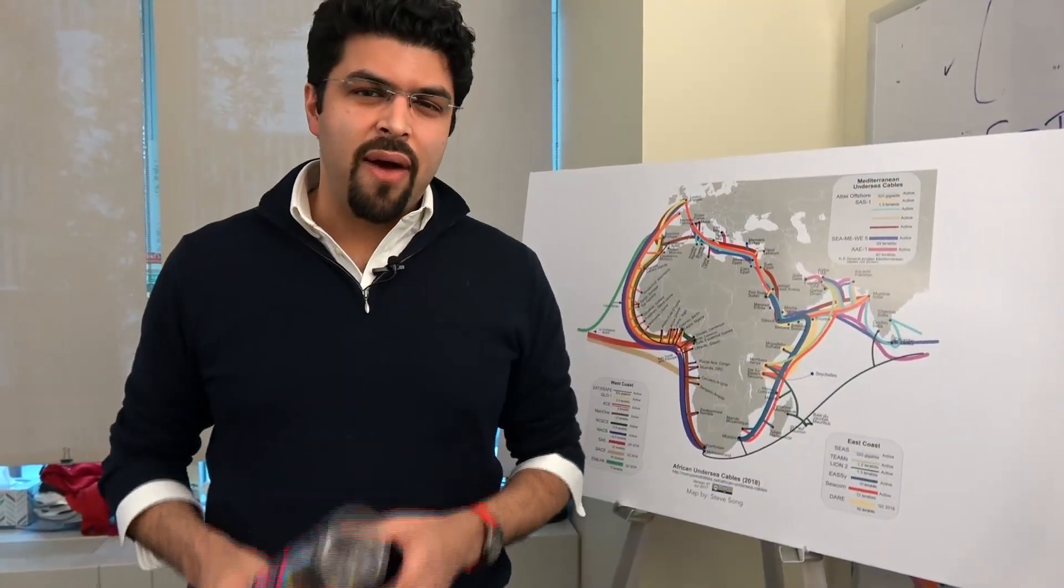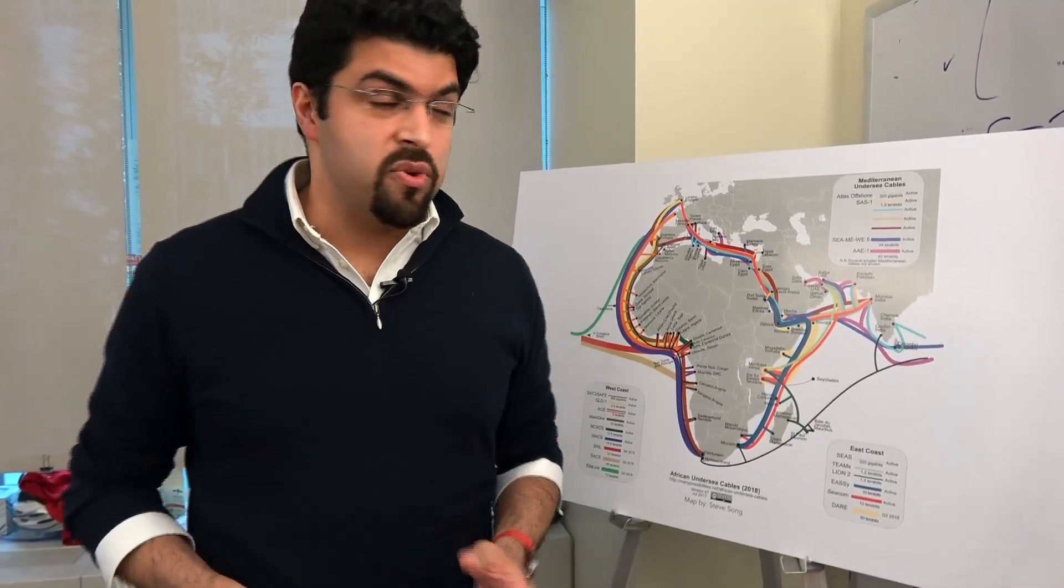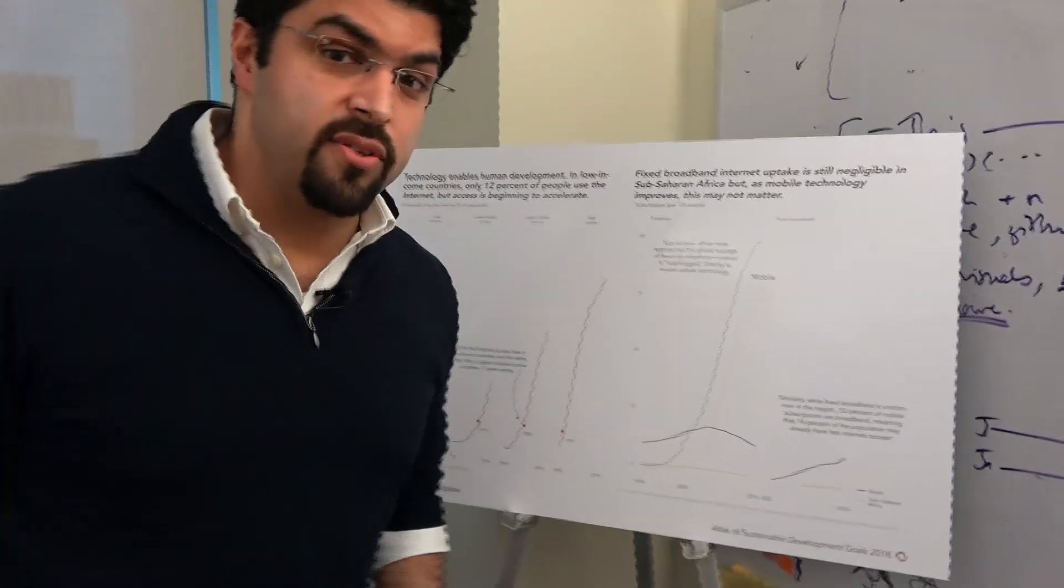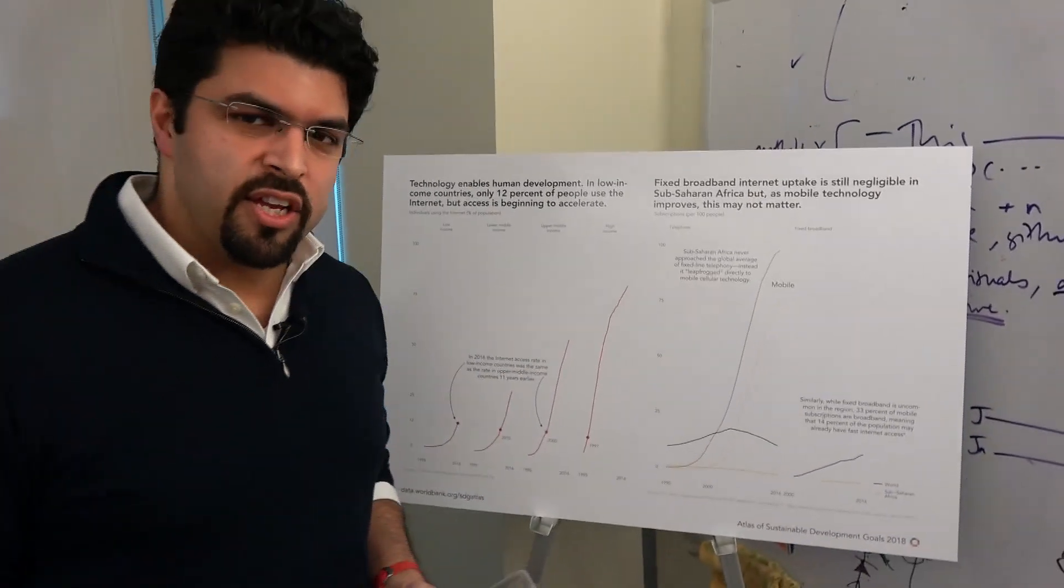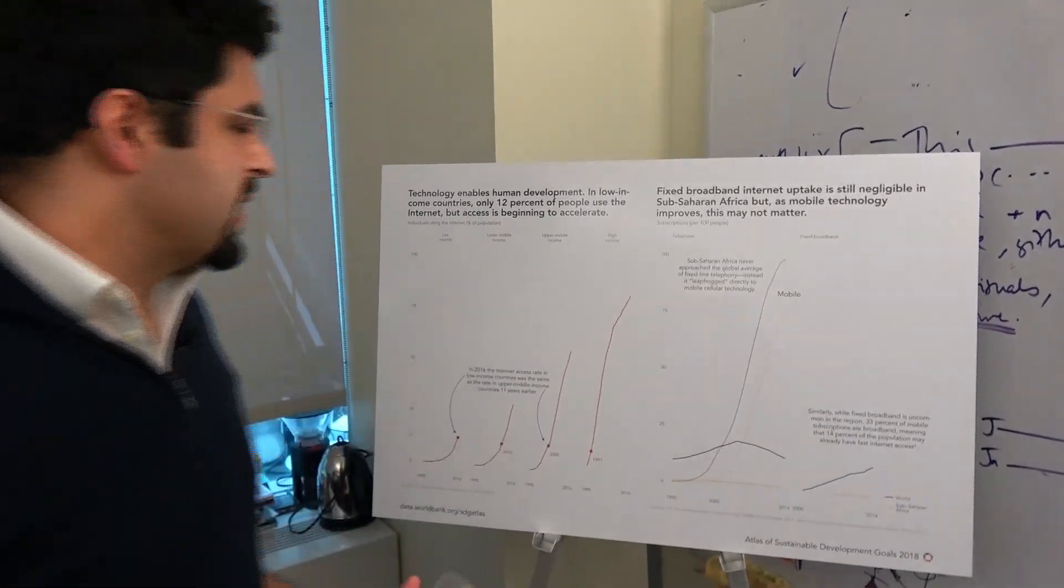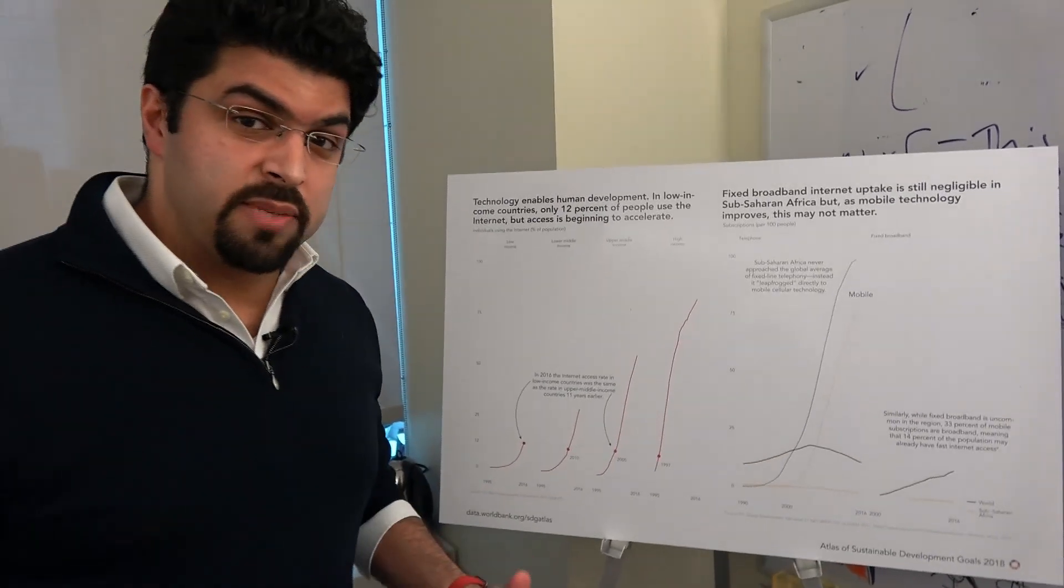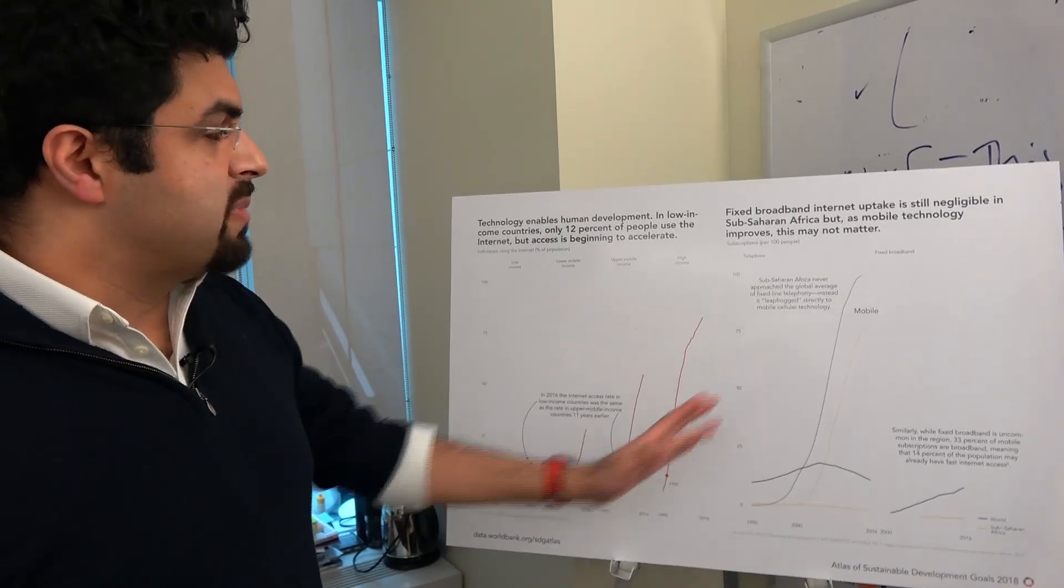So let's get back to how access to technologies varies around the world. So here's a graphic from our upcoming 2018 Atlas of Sustainable Development Goals, which will be available to the public in early May, but you can have a sneak peek now. So remember, earlier we saw how internet access was available to about half the world's population. This actually varies by income groups.